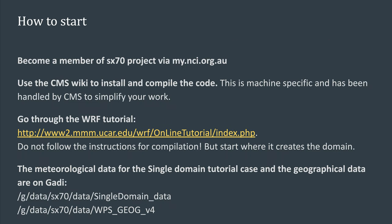So how do you start using WRF at NCI? It is recommended to become a member of the SX70 project via my.nci.org.au. When we port the code to the Gadi machine, we have already set up all the options that are relevant to the machine. We advise you to use the version we have ported and to follow our instructions for compiling the code. If it is the first time you are using WRF, it is recommended to go through the WRF tutorial to understand how the WRF workflow works.